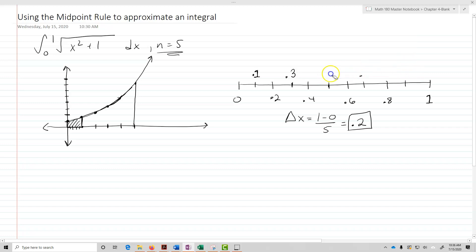That's not right. First one's at 0.1. Second one's at 0.3. The third is at 0.5. The fourth is at 0.7. The fifth is going to be at 0.9. So those are going to be where I'm going to evaluate my f of x.